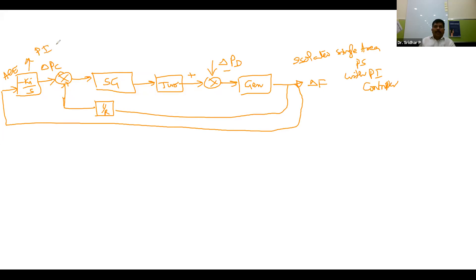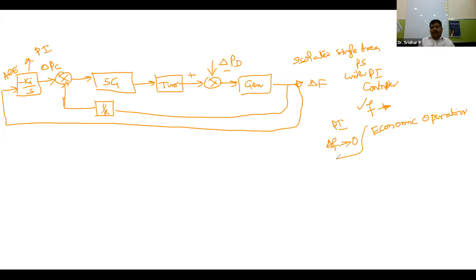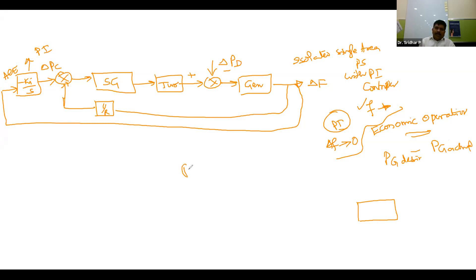This is the isolated single-area power system with a PI controller embedded. The PI controller with transfer function −K_i/s performs frequency correction — adjusting change in frequency toward zero. This is one parameter we must compensate. The second parameter is economic operation.